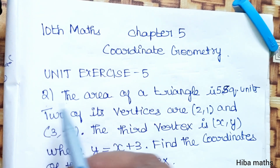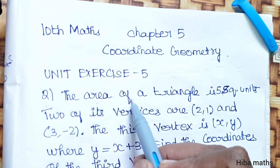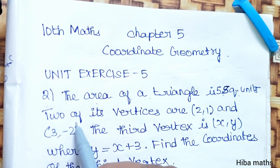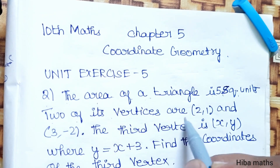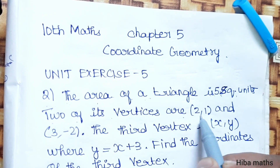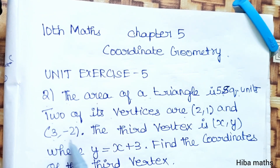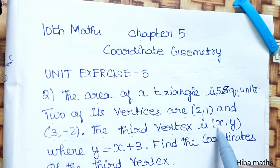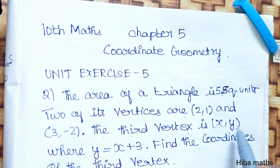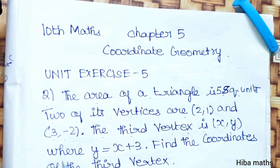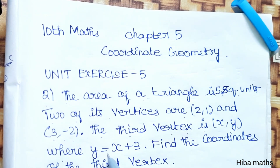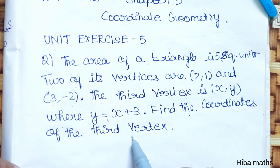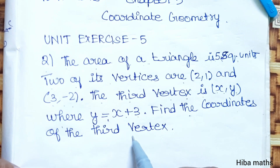Second question: the area of a triangle is 5 square units. Two of its vertices are (2, 1) and (3, -2). The third vertex is (x, y), where y is equal to x plus 3. Find the coordinates of the third vertex.